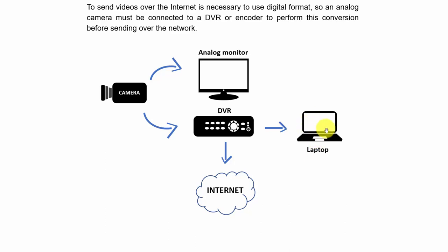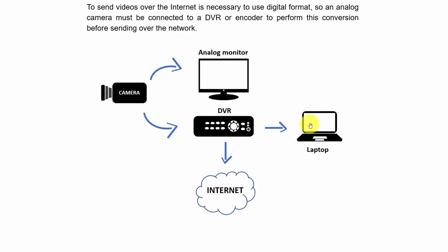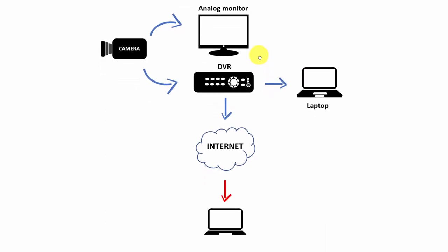When you have a laptop, you install software so it can read all the information from the DVR and you can have live video coming from the camera. The video comes from the camera to the DVR, which converts from analog to digital, and then when it's digital you can watch it on your computer — as long as you have software for that, or a web browser in some cases — but it's better to have dedicated software.